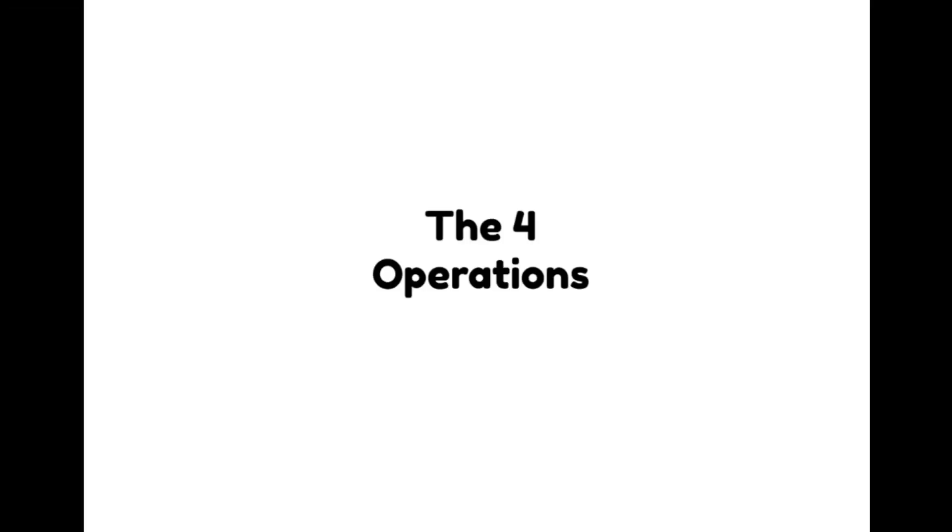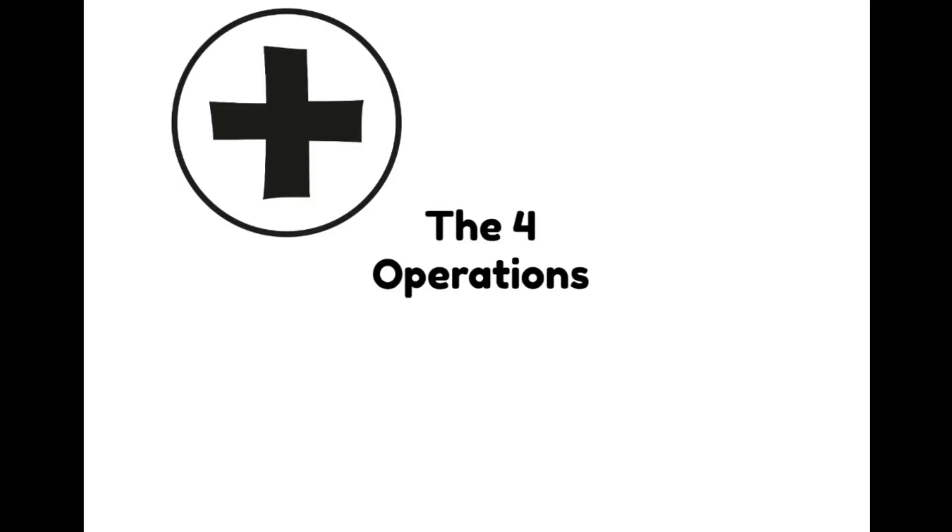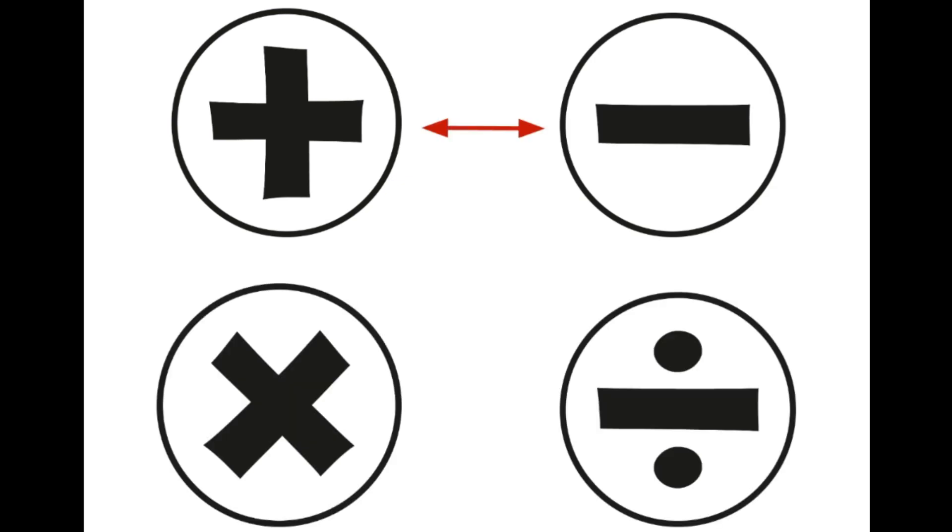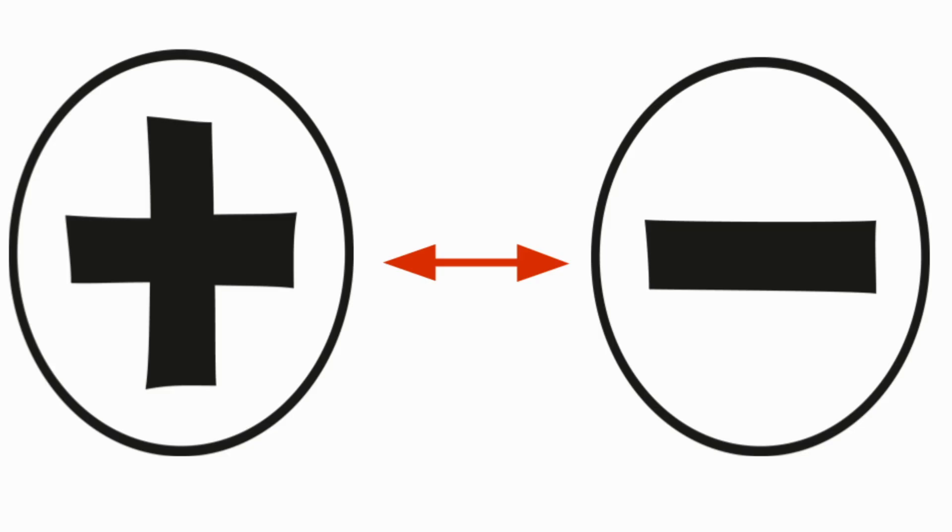In maths, we have four operations. We have addition, subtraction, multiplication and division. In these four operations, there are two inverse relationships. Addition and subtraction are opposite of each other, and so is multiplication and division. But let's take a closer look at addition and subtraction today.